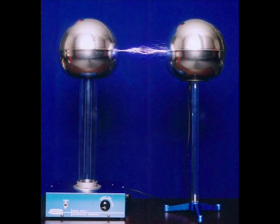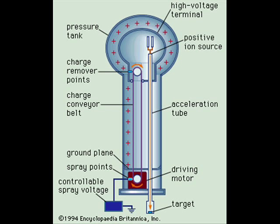The Van de Graaff generator makes use of the possibility of spraying an electric charge from sharp points of a conductor. The charge is thus applied to a belt conveyor made of insulating material which conveys the charge into the interior of a spherical conductor of a large radius, where the charge is collected by a comb of pointed electrodes.